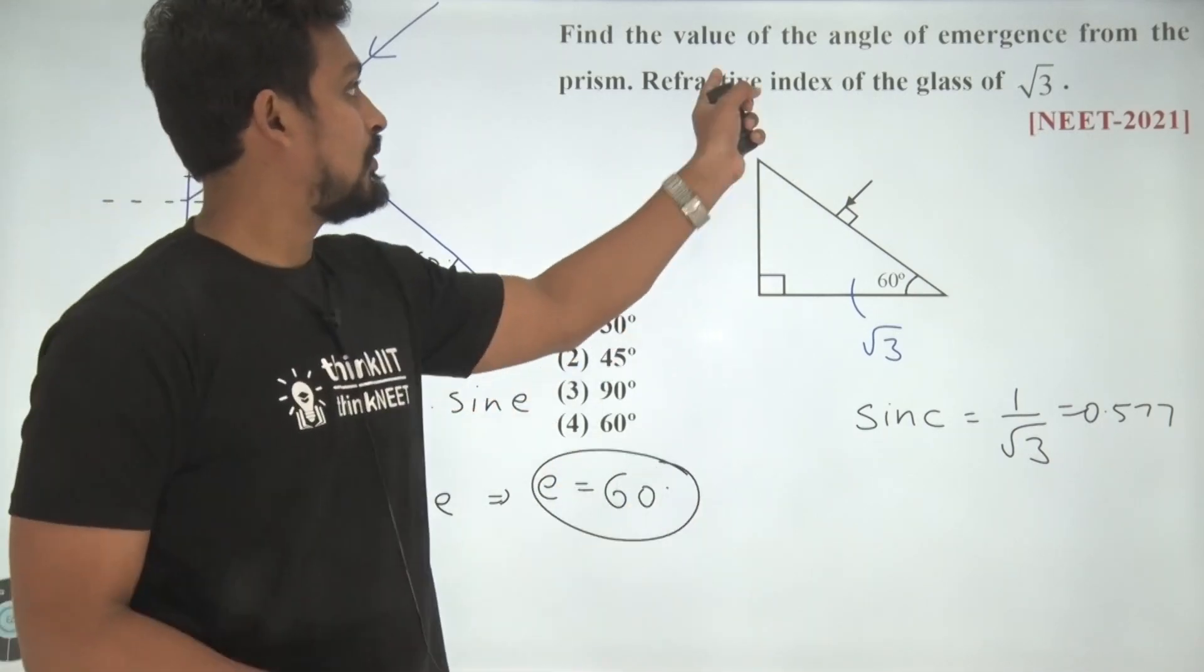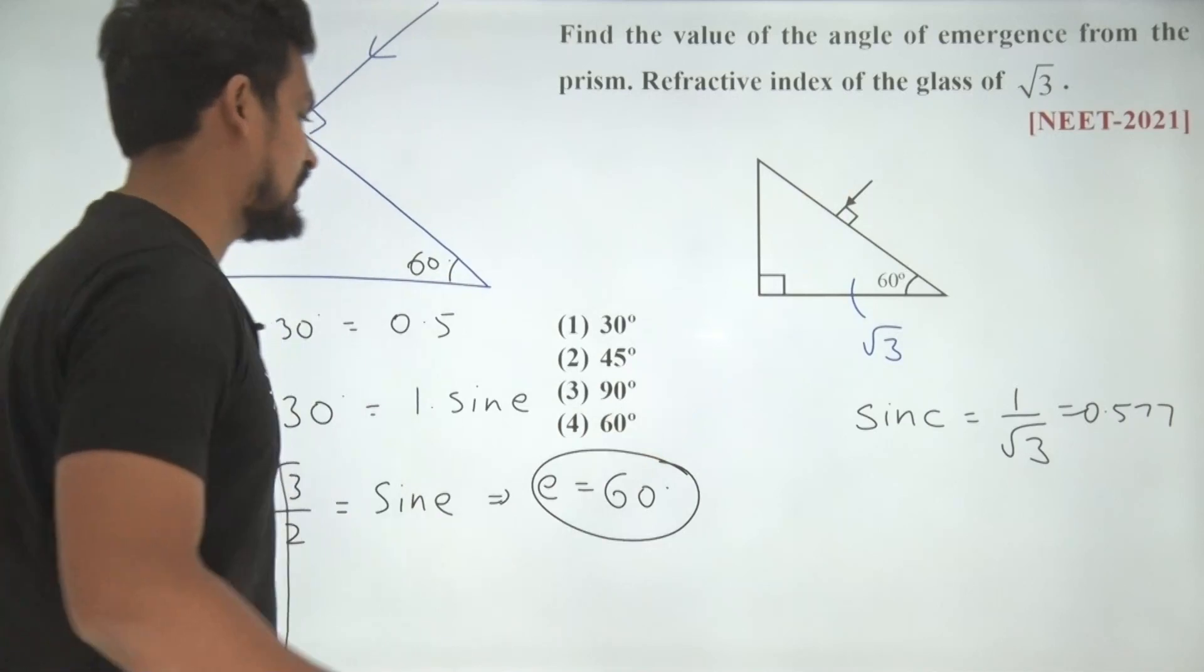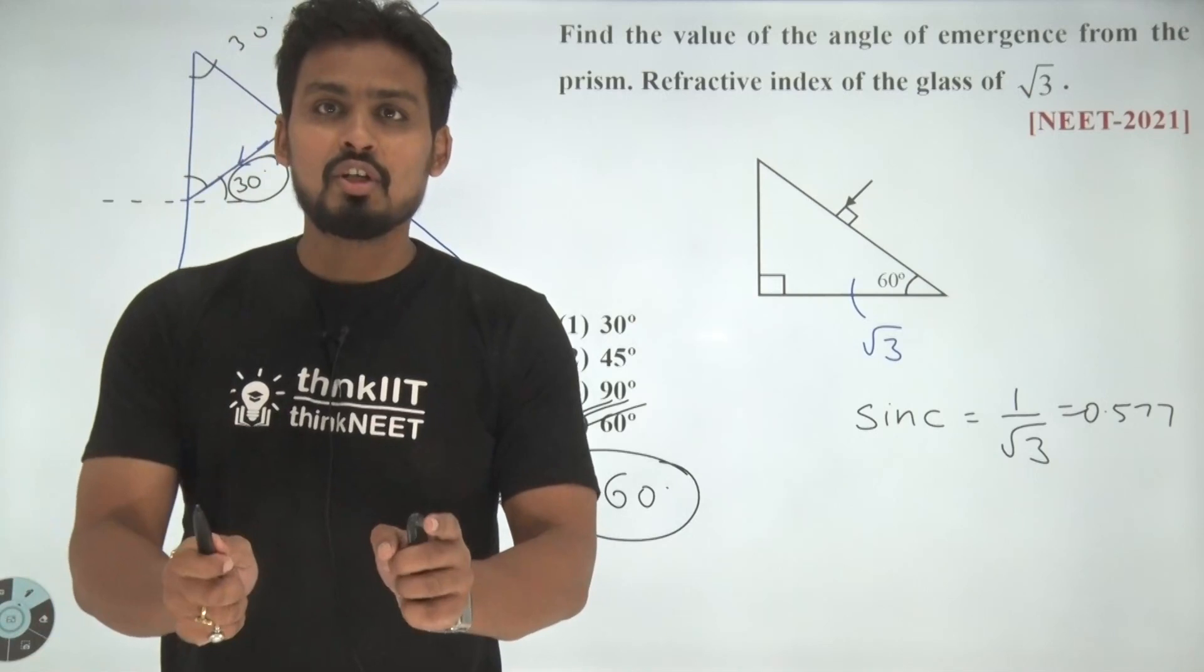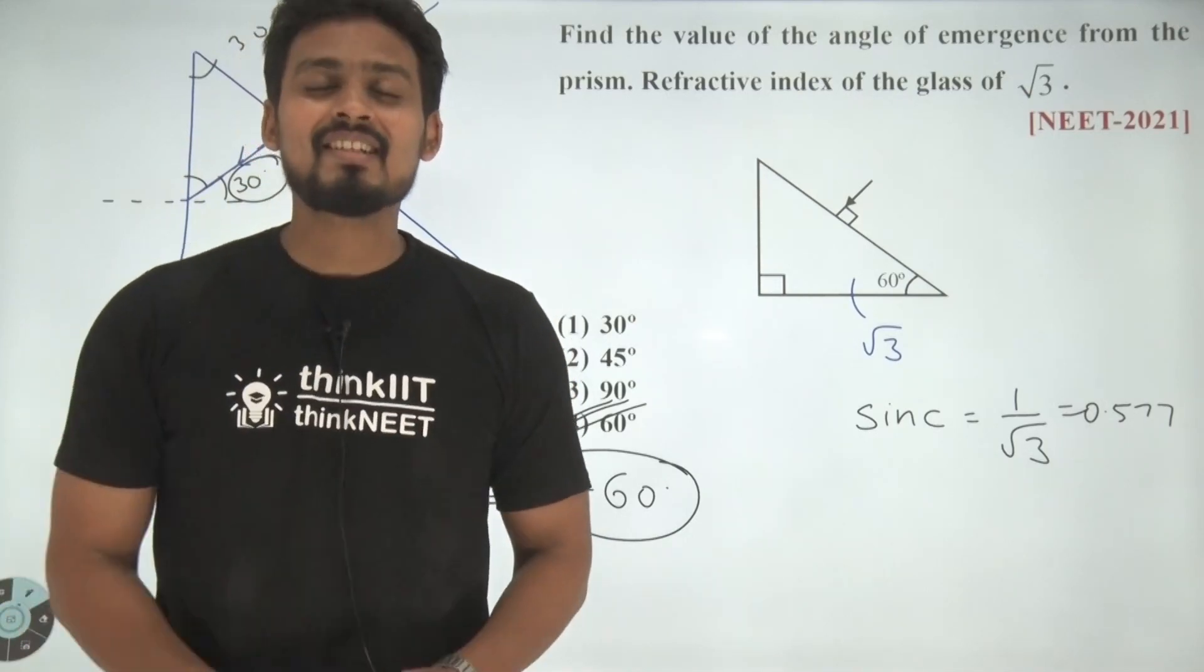Now, in the question they have asked us what would be the value of angle of emergence. For this, the answer becomes 60. Therefore, the correct answer for this particular question becomes option 4. I hope you have understood this. Thank you.